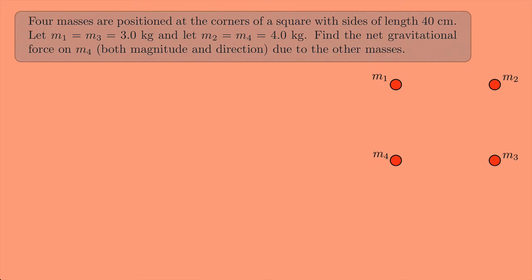So here's my four masses. These are at the corners of a square. And I'm interested in mass 4, this one right here. And I know that the gravitational force is always attractive, so there's going to be a force from m1, a force from m2, and a force from m3.